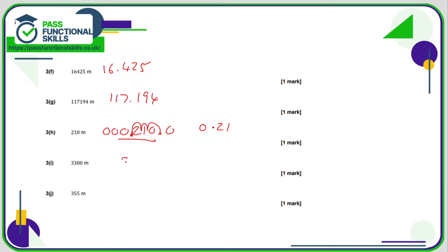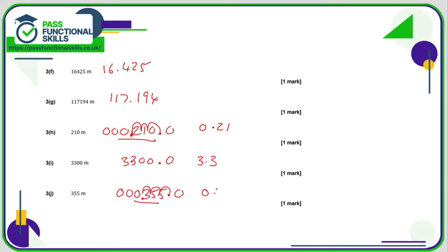For 3300, put in a decimal point and a zero, move the decimal point one, two, three positions to the left — that is 3.3. For 355, put some zeros in front and a decimal point and a zero, move the decimal point one, two, three positions — the answer is 0.355 kilometers.